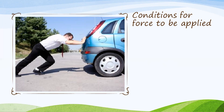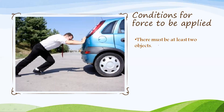Now let us look into the conditions for force to be applied. In a picture, a man is trying to push a car. To move the car, he cannot just stand near it — he must have an interaction with the car, meaning he must touch it. So the first condition is: there must be an interaction between two objects. At least two objects must be present — one to apply the force and another to receive it.